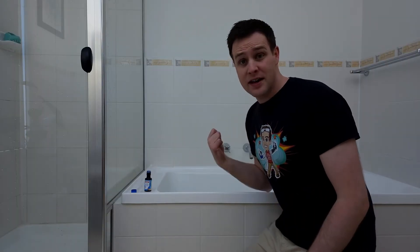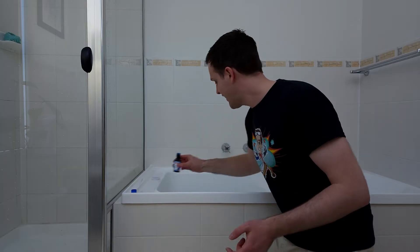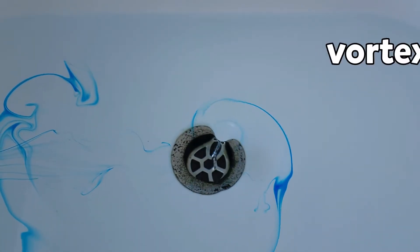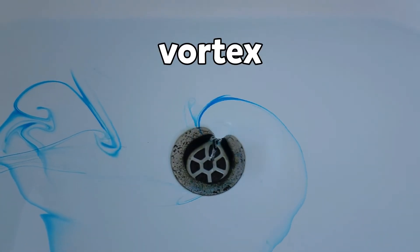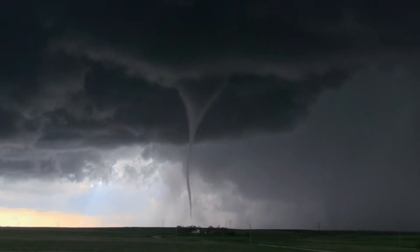Have you ever noticed the water in your bathtub spinning as it goes down the drain? This is known as a vortex. In this particular vortex, the water spirals around and forms a funnel shape which looks a lot like another funnel-shaped vortex, the tornado.